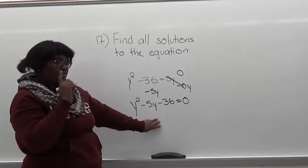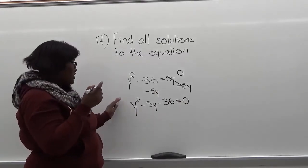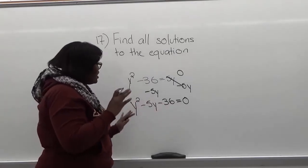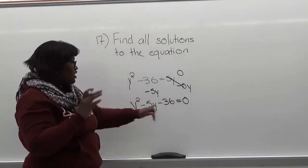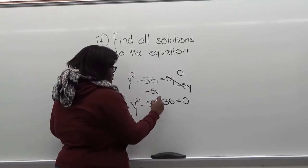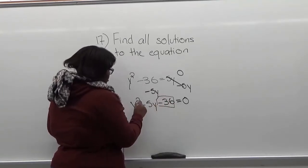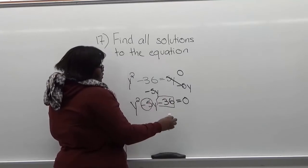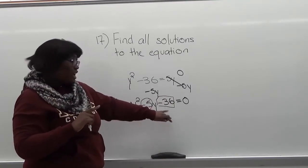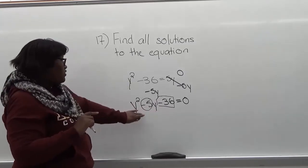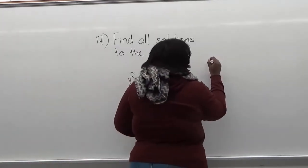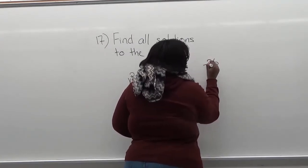Now we're going to factor this equation. To factor this we're going to look at this number right here which is 36 and this number which is 5. The two numbers that multiply to give you negative 36 and add together will give you negative 5. First, let's have negative 36.